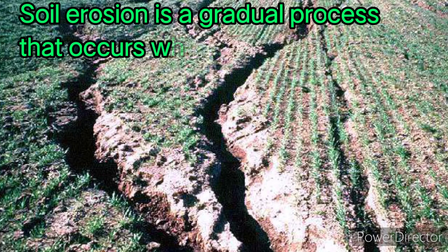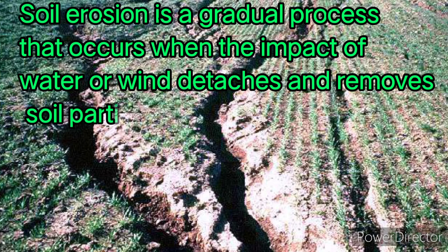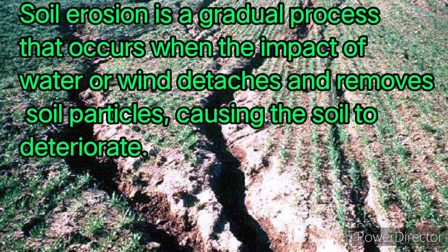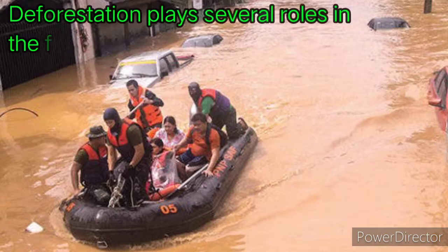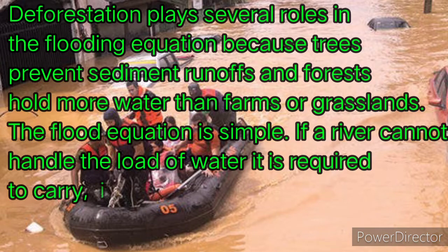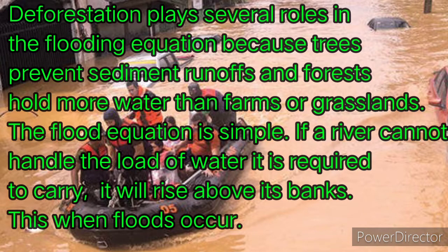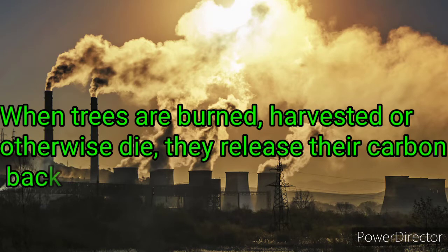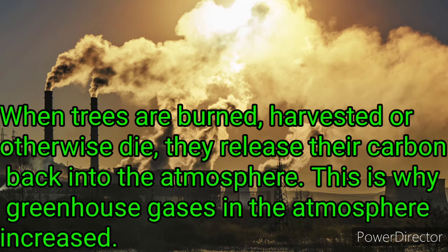Soil erosion is the gradual process that occurs when the impact of water or wind detaches and removes soil particles, causing the soil to deteriorate. Deforestation plays several roles in the flooding equation because trees prevent sediment runoffs and forests hold more water than farms or grasslands. The flood equation is simple: if a river cannot handle the load of water it is required to carry, it will rise above its banks — this is when floods occur. When trees are burned, harvested, or otherwise die, they release their carbon back into the atmosphere. This is why greenhouse gases in the atmosphere increase.